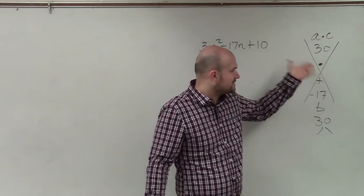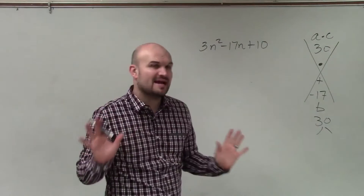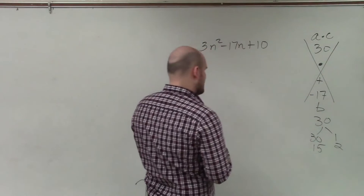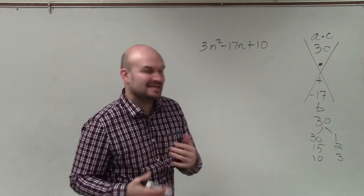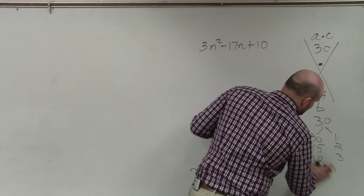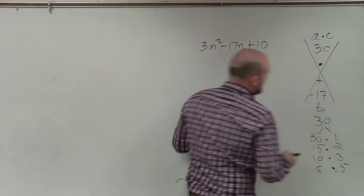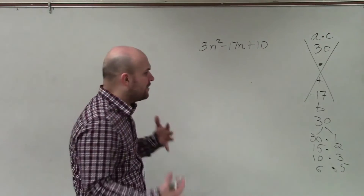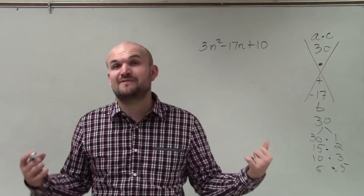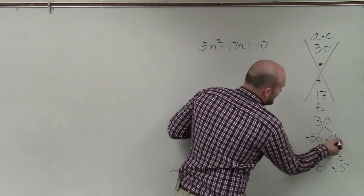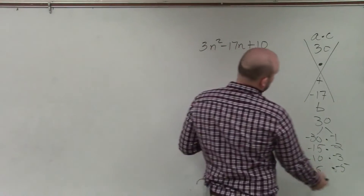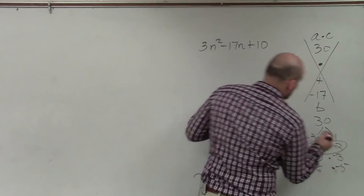To identify my two factors, I need to find factors of 30 that multiply to give 30 but add to give negative 17. Forget about the negative just for a second — factors of 30 include 1 and 30, 2 and 15, 3 and 10, 5 and 6. Since they have to add to negative 17, both must be negative. Making both factors negative: negative 15 and negative 2 add to give negative 17. Winner winner chicken dinner — I've identified negative 15 and negative 2.